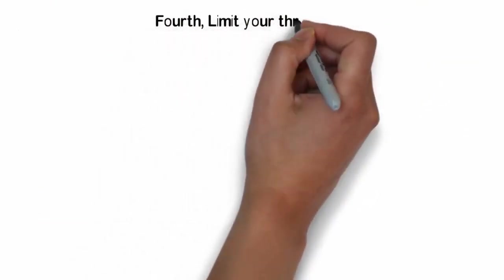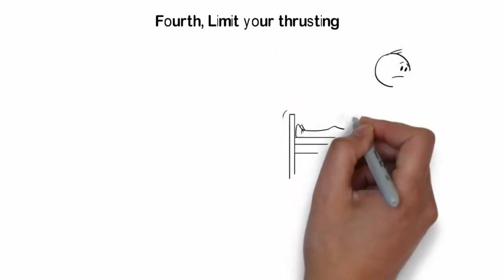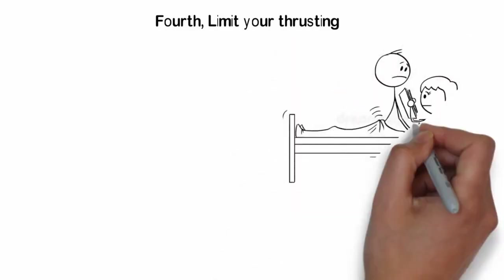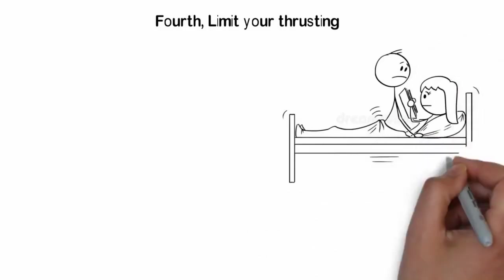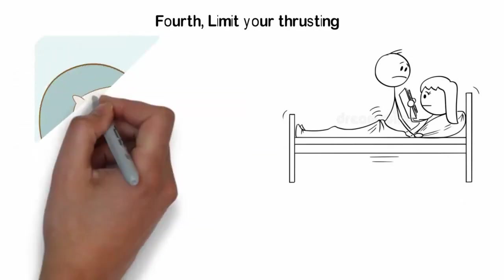Fourth, limit your thrusting. There are plenty of ways to enjoy intercourse without thrusting like a jackrabbit. You can massage the tip of your penis into her clitoral hood. You can focus on the nerve endings in her vaginal entrance instead of seeing how deep you can get. You can press your penis against her G-spot.